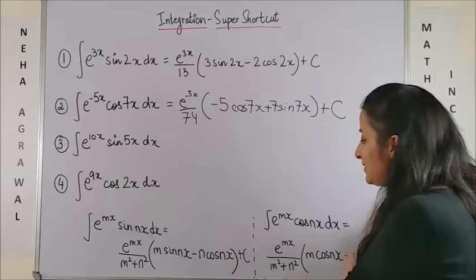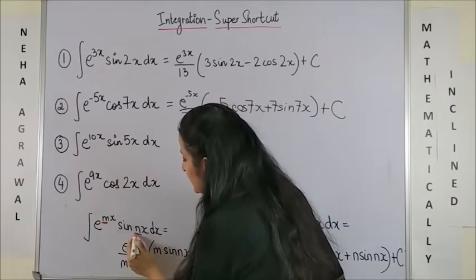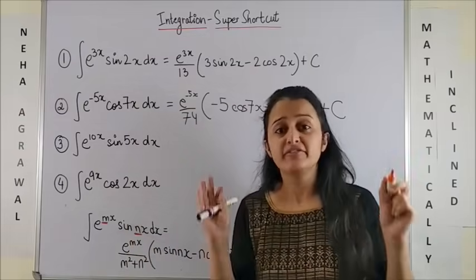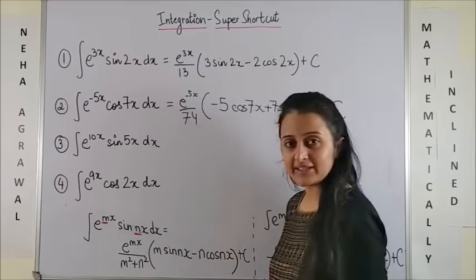So look at the magic formula. If you have e to the power mx into sine nx, then very simple to remember this e to the power mx is copied down as this. Upon it will be m squared plus n squared.